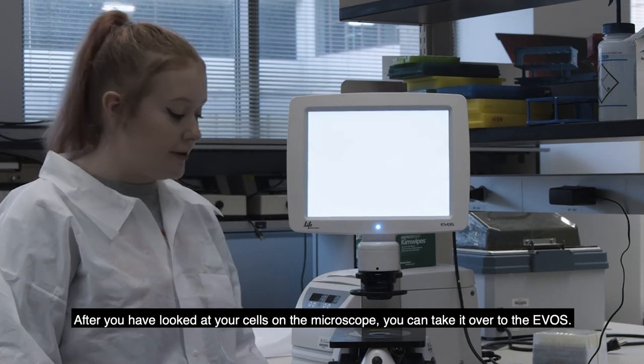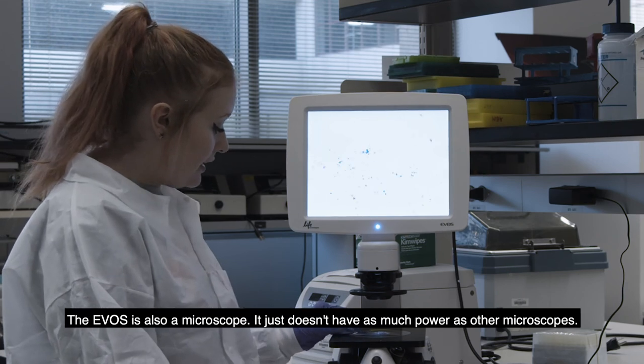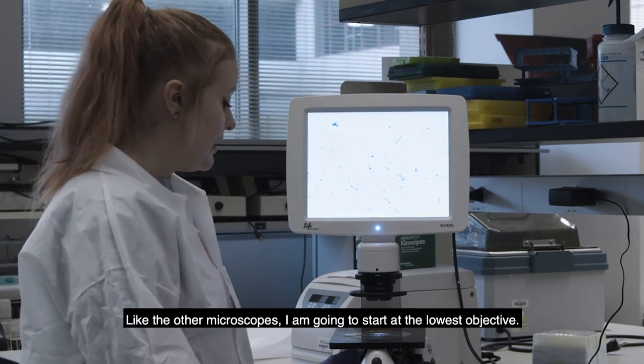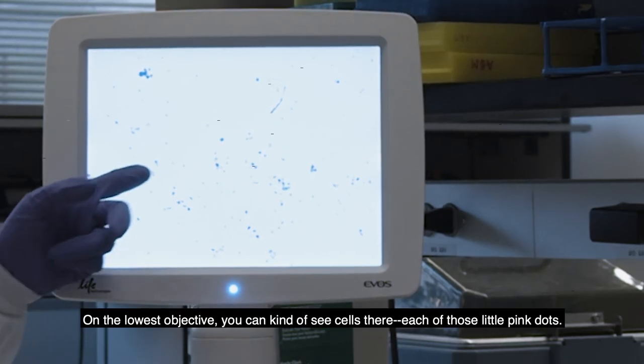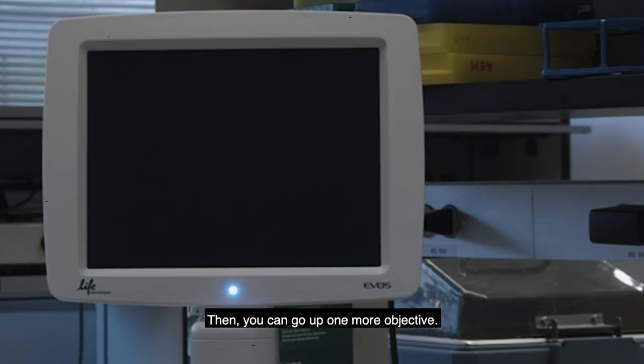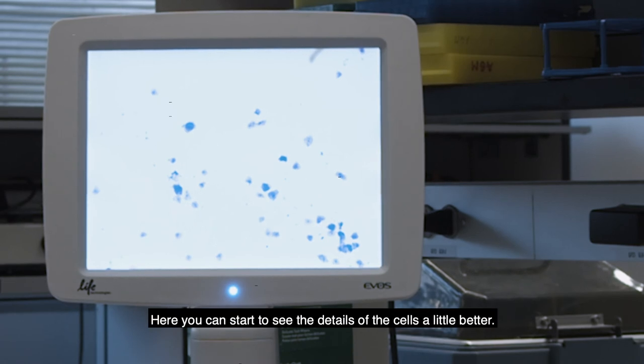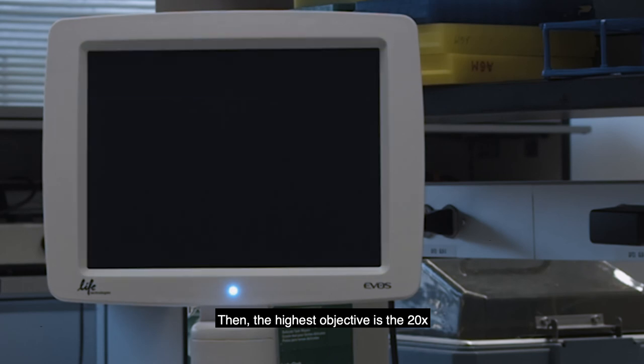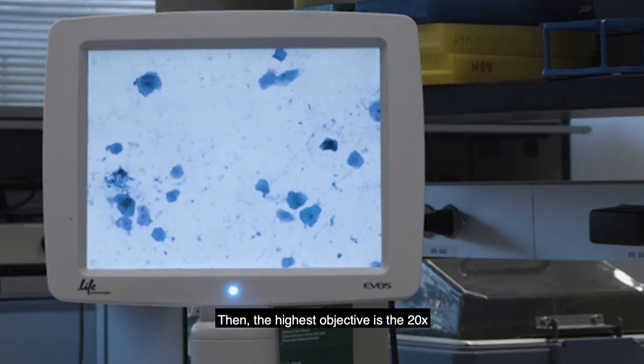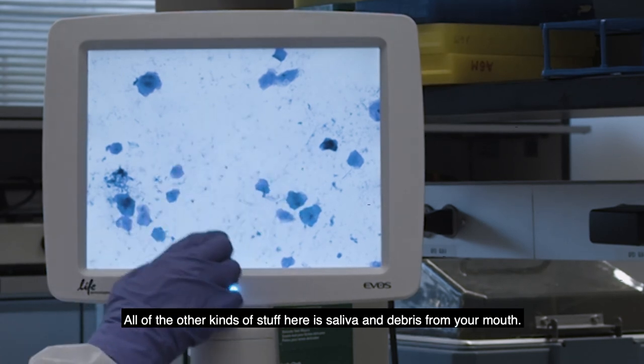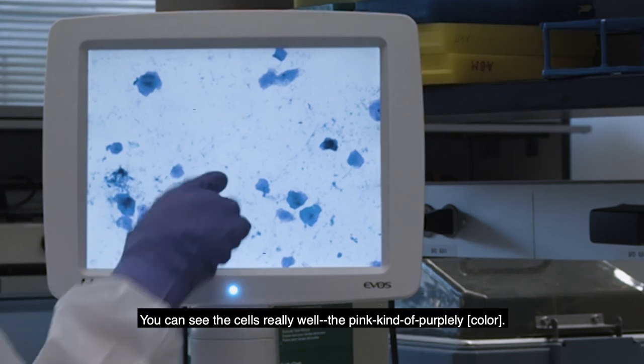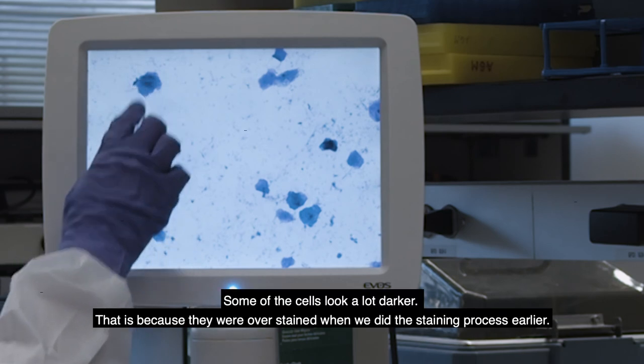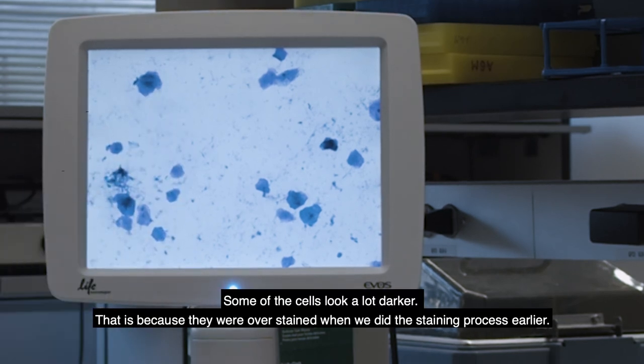So after you've looked at your cells on the microscope, you can take it over to the EVOS. So the EVOS is also a microscope. It just doesn't have as much power as the other microscopes. But it does have the monitor which helps you visualize the cells better. So like the other microscopes, you want to start at the lowest objective. So on the lowest objective, you can kind of see the cells there, each of those little pink dots. And then you can move up one more. And then there you can start to see the details of the cells a little better. And you might have to focus and adjust some things as you go up each objective. And then the highest objective is the 20x. So here you can see the cells pretty well. So all of the kind of other stuff here is just saliva and debris from your mouth. And then you can see the cells pretty well. The pink kind of prickly. And then you can see the darker purple dot in the middle, which is the nucleus of each of the cells. And some of the cells look a lot darker. And that's just because they were overstained when we did the staining process earlier.